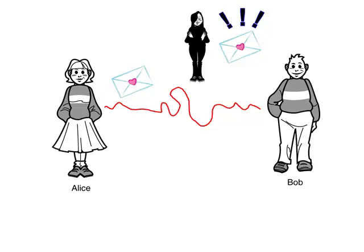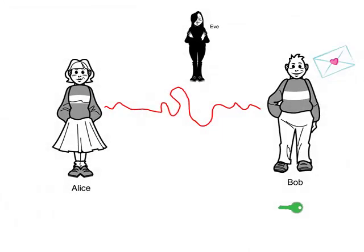What's to be done? One thing Bob could try is encrypting the message with a secret key or password. There are many programs that will do this. The key is applied to the message, and presto! The message is encrypted, and nobody who doesn't have the key can read it.